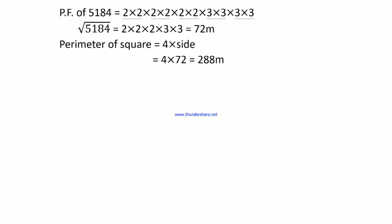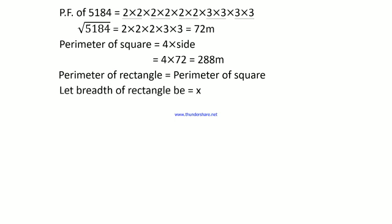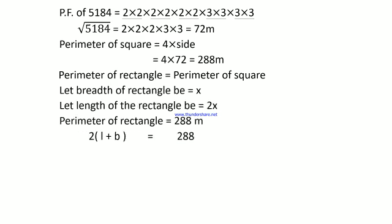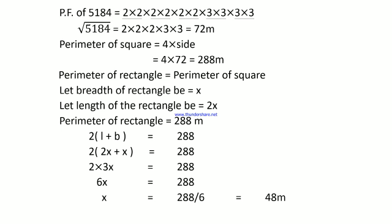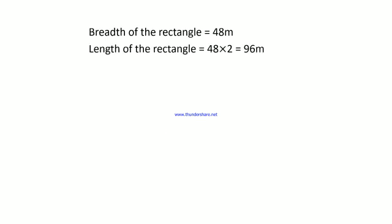The perimeter of the rectangle equals the perimeter of the square, so the perimeter of the rectangle is 288 m. The length of the rectangle is twice its breadth, so let breadth = x and length = 2x. Using the formula: 2(L + B) = 288, we get 2(2x + x) = 288, giving x = 48. So breadth = 48 m and length = 2 × 48 = 96 m.